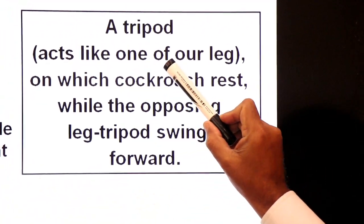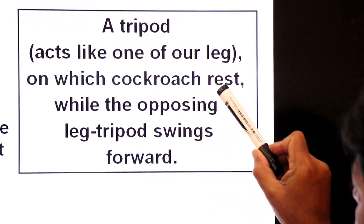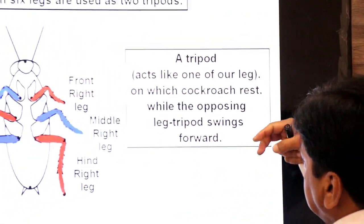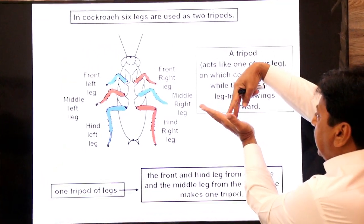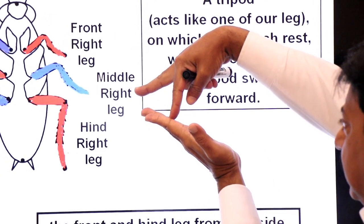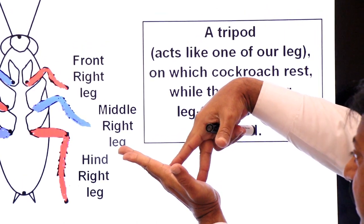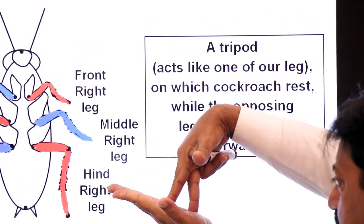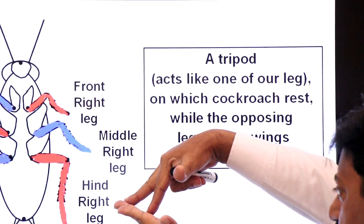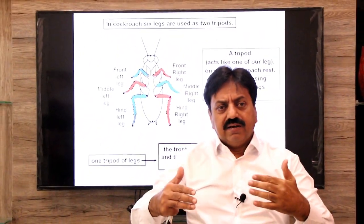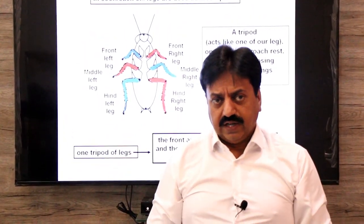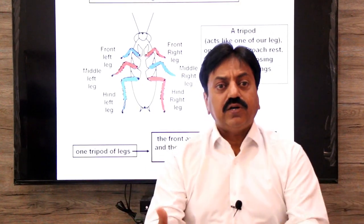A tripod acts like one of our legs, on which the cockroach rests, while the opposing leg tripod swings forward. Just as humans move by placing one leg forward, gripping the ground, and then swinging the other leg forward, the cockroach rests on one tripod and moves the other tripod forward alternately.